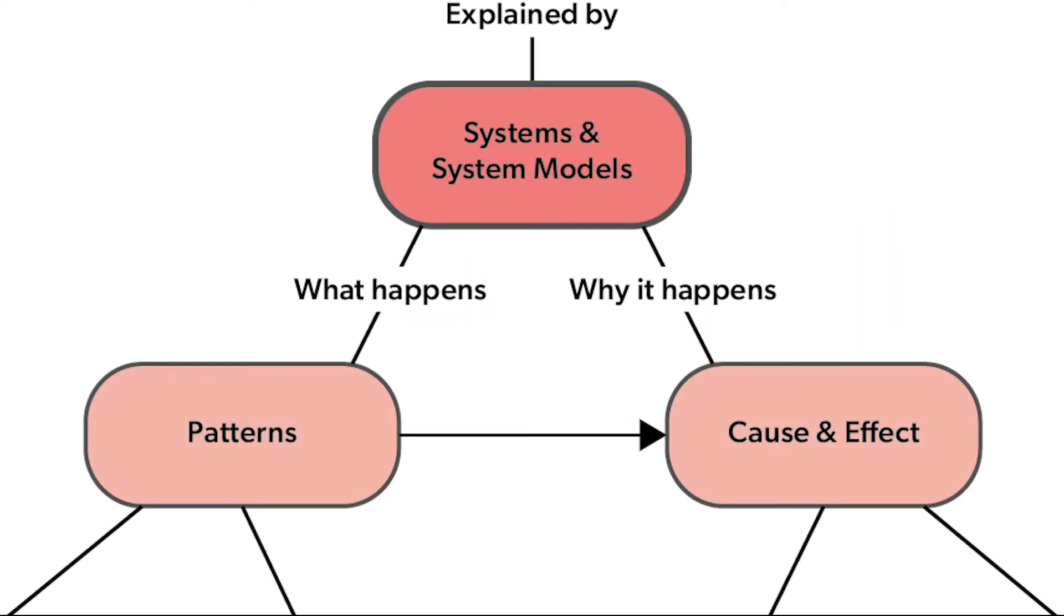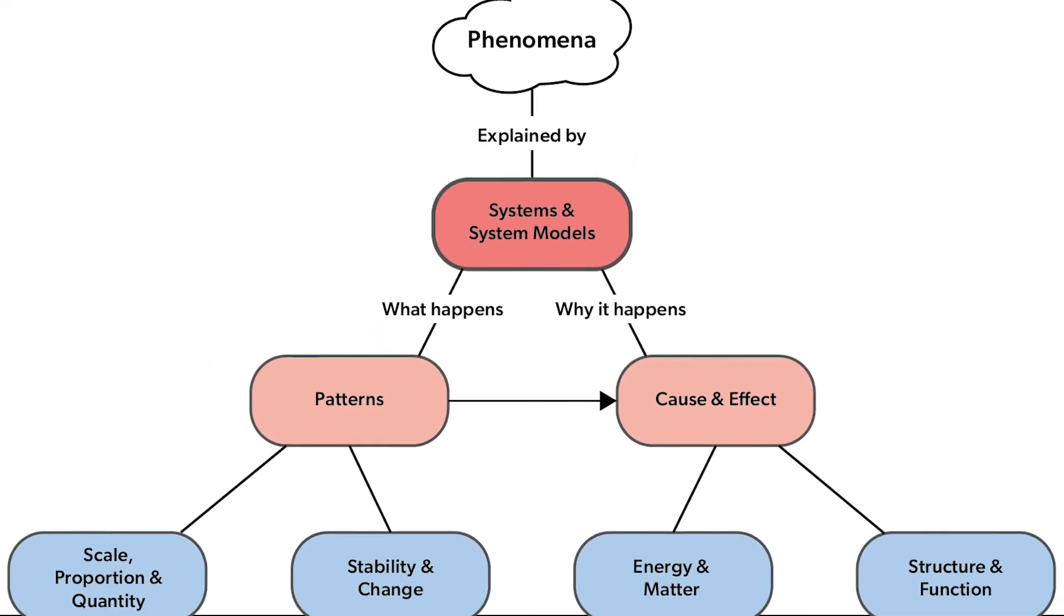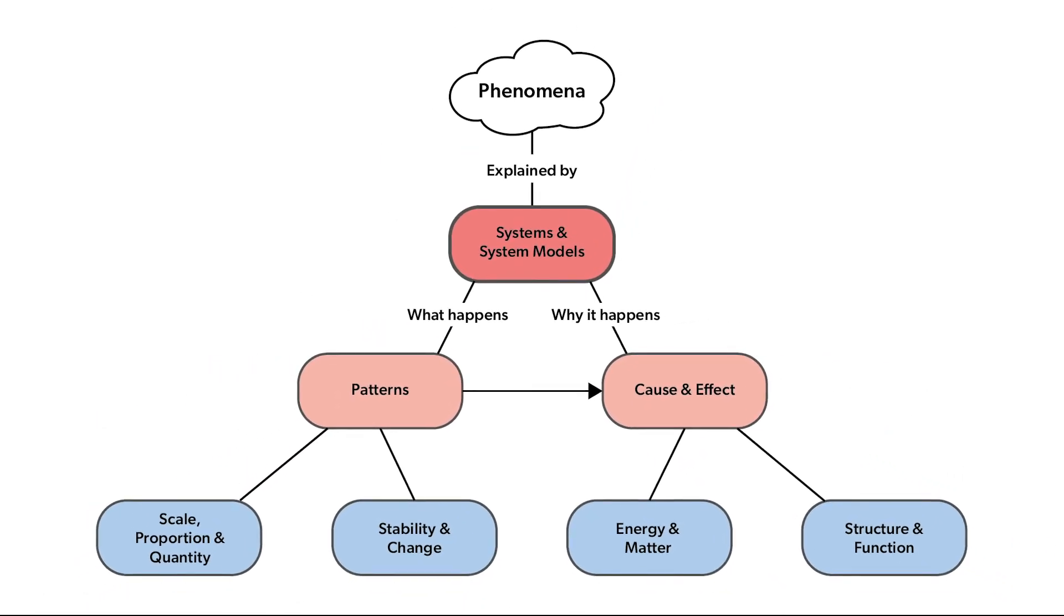The cross-cutting concepts of patterns and cause and effect help us describe what is happening in a system and understand why something is happening in a system. A pattern between two quantities may be evidence of a cause and effect relationship, or it may not. Scientists conduct tests to figure out which patterns are cause and effect relationships.